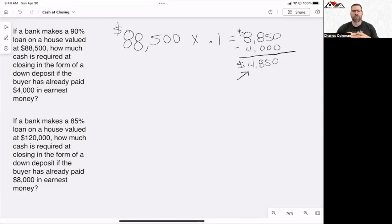This is the number, the dollar that the buyer is going to have to bring a check for to the closing table. They're responsible for 10% of $88,500. They already dropped off $4,000 in earnest money, so they have to bring another check for $4,850. So let's look at the other one.